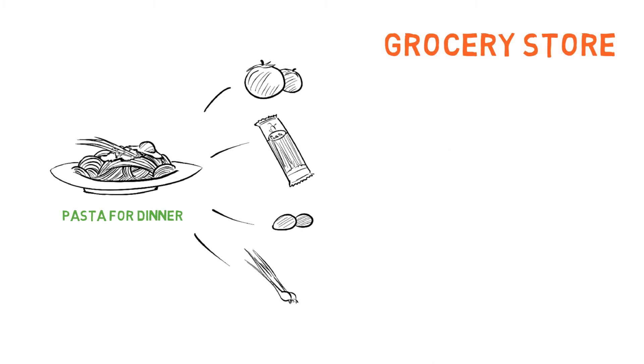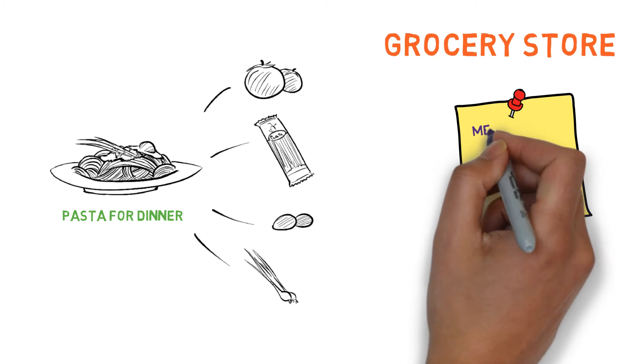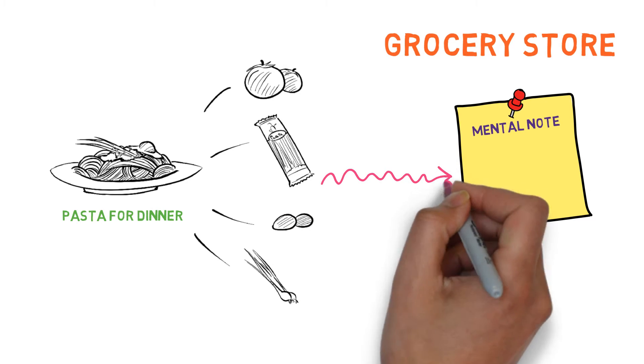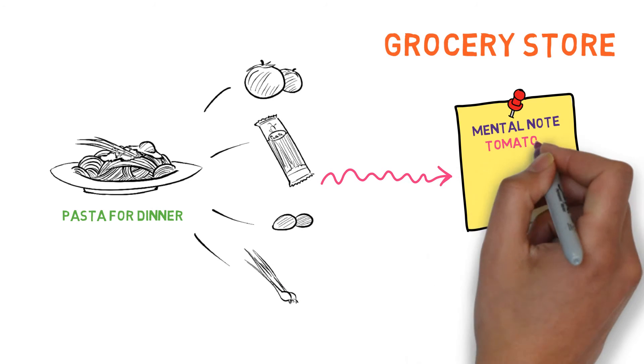First, you must encode what to buy by making a mental note about these things. In order to remember, you pay careful attention to what ingredients there are on the recipe.